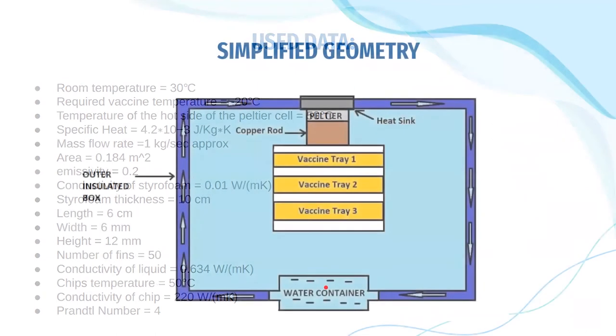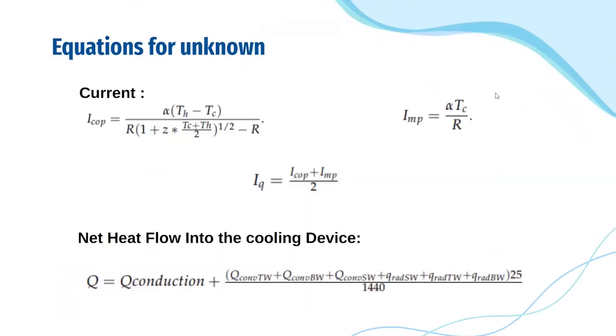So, this is the simplified geometry of what we are going to solve. So, there are two major currents when it comes to the Peltier cell. One is the I_COP. The other one is the I_MP. I_COP is the current at which the coefficient of performance is maximized. And I_MP is the current at which the maximum power is given out. We would operate on I_Q to cool the contents of the box to the temperature we require, which is minus 20 degrees Celsius.